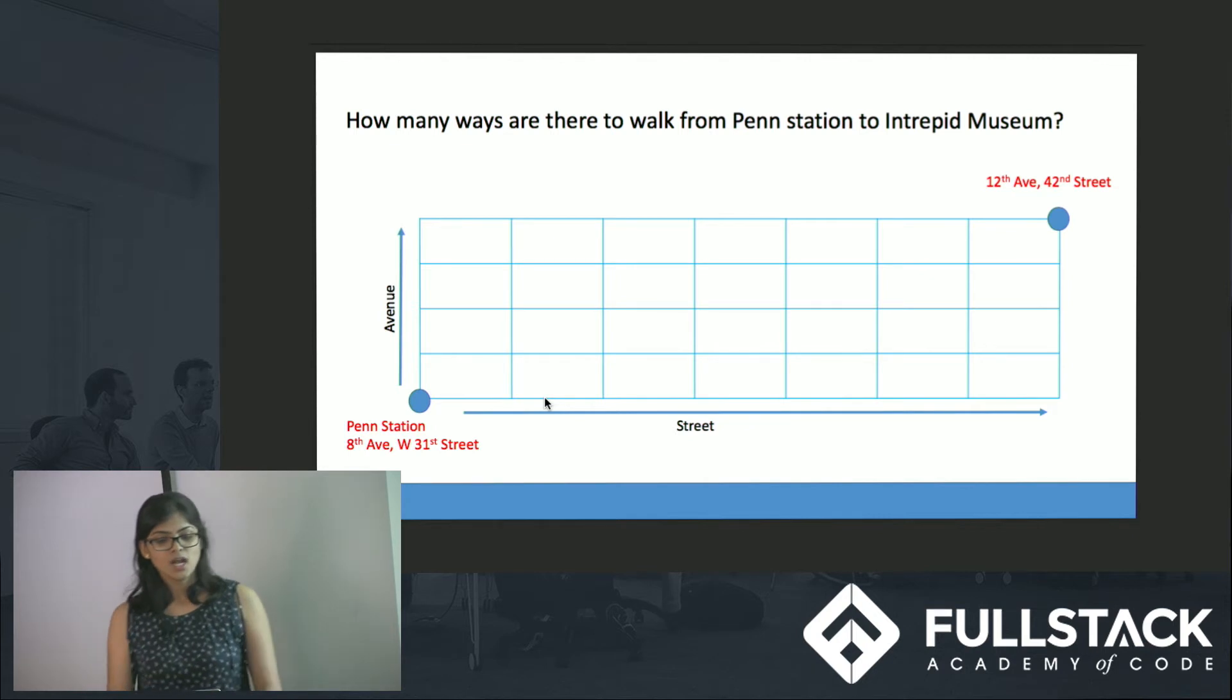The question here is how many ways I can reach from Penn Station to Intrepid Museum. Manhattan is a grid. Manhattan has avenues going from north to south and the cross streets going from east to west. This reminds us of one of the concepts that we learnt in our high school which is binomial coefficient.